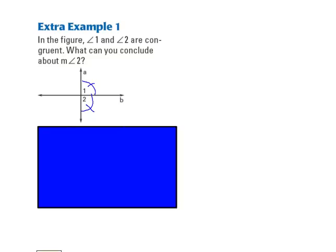Moving on. First example. In the figure, angle 1 and angle 2 are congruent. What can you conclude about the measure of angle 2? So on the diagram, we've marked that these two angles are congruent. So a couple conclusions can be reached using the theorems that we just read.